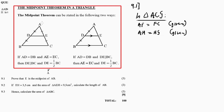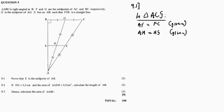This equal to that, and this equal to that. By the midpoint theorem, the conclusion is that FH is parallel to GC. This is because of the midpoint theorem.